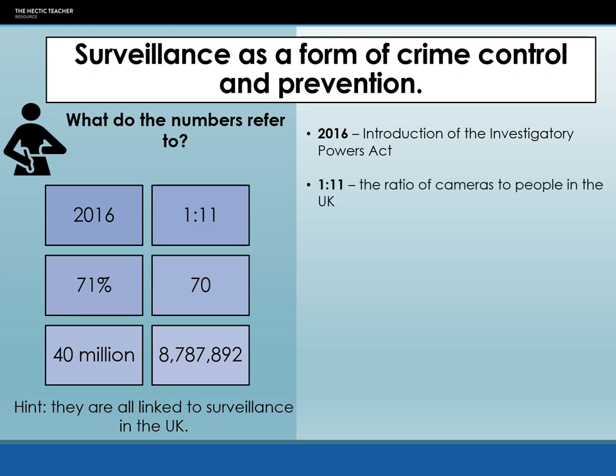1 in 11 refers to the ratio of cameras to people in the UK — there is one CCTV camera for every 11 people in the UK, estimated. It may be more or maybe less, because not everyone has an active working CCTV camera; they might just have the hardware but it doesn't actually do anything. But one for every 11 people, that's a lot of CCTV cameras.